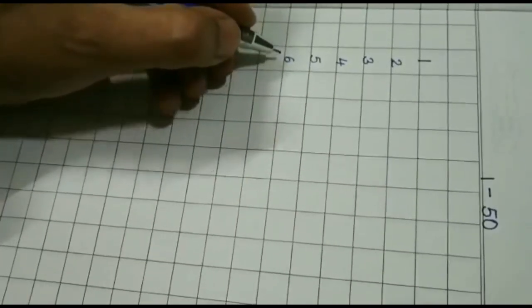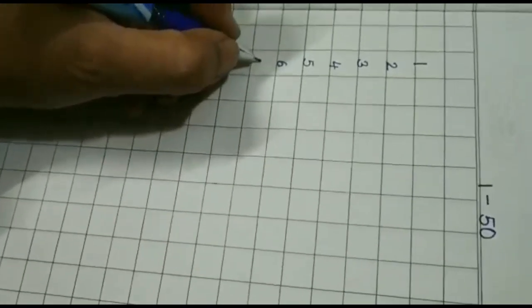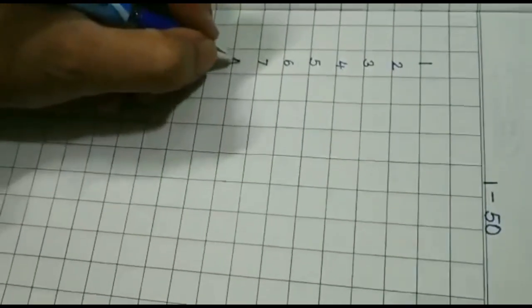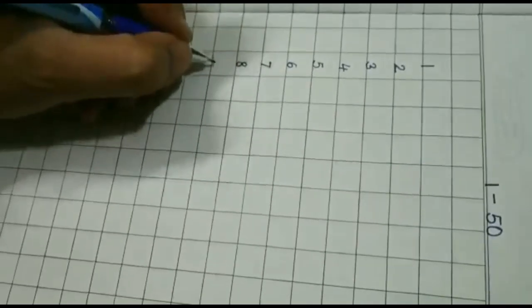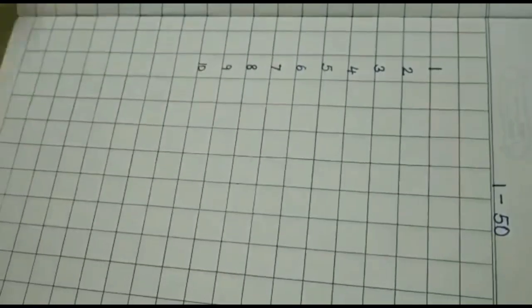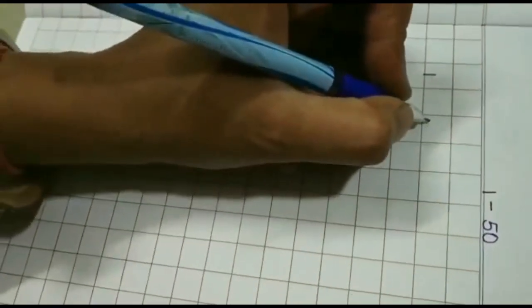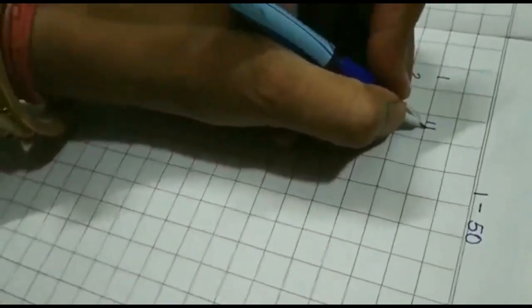7, 8, 9, 1, 0, 10. Now leave one block and write 1, 1, 11.